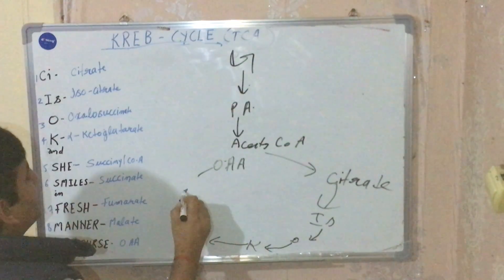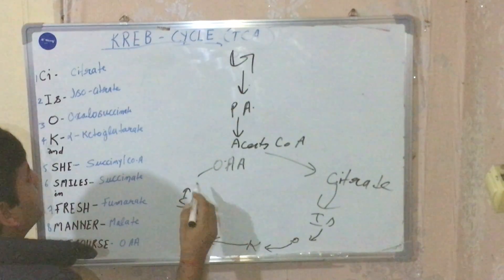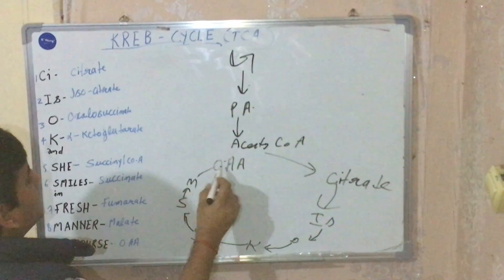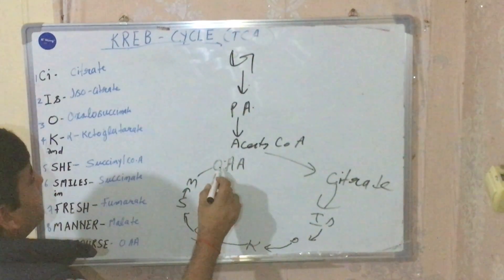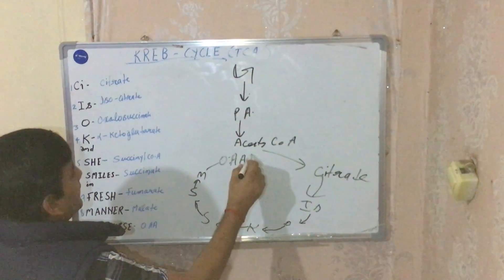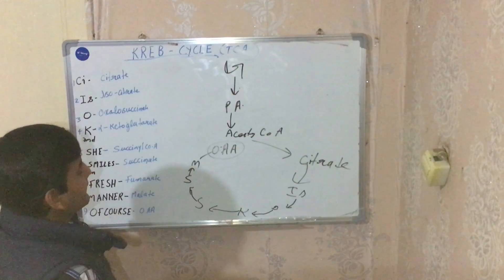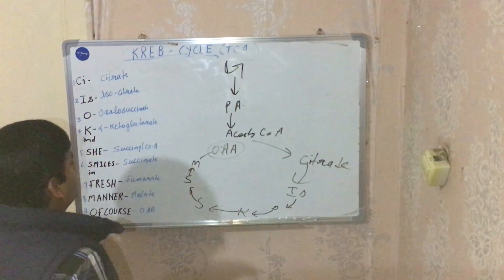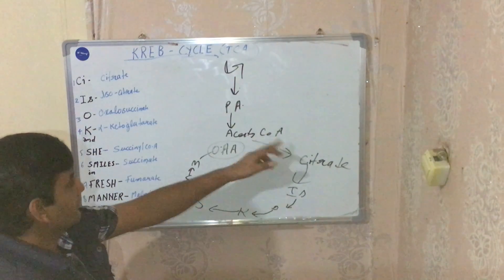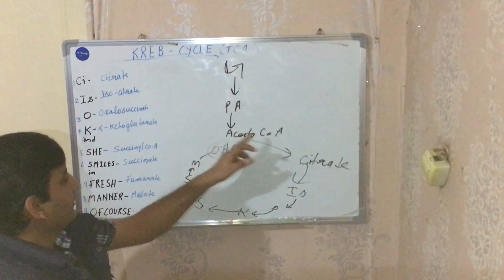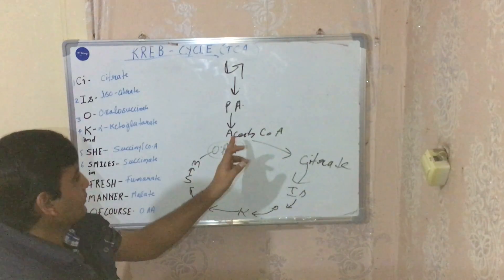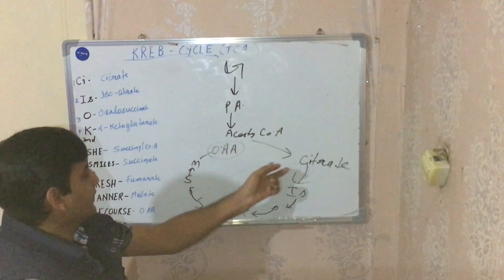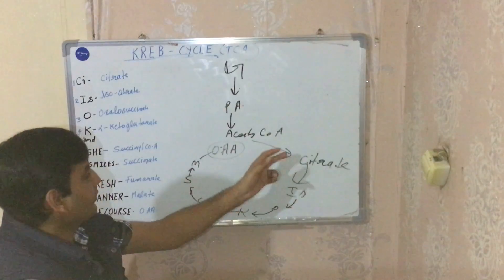Succinyl coenzyme A is converted into succinic acid, and succinic acid is further converted into malic acid. Malic acid is then converted back into oxaloacetic acid, completing the cycle. These are the eight steps of the Krebs cycle.